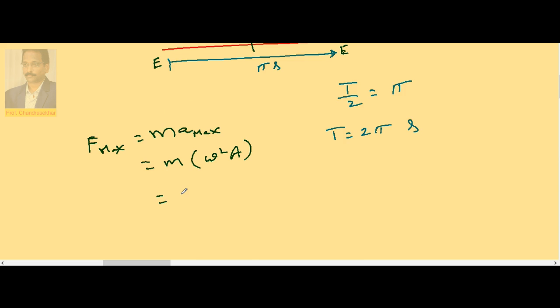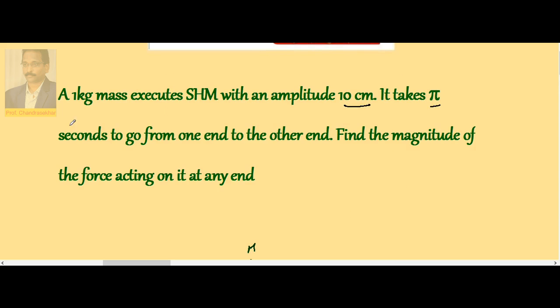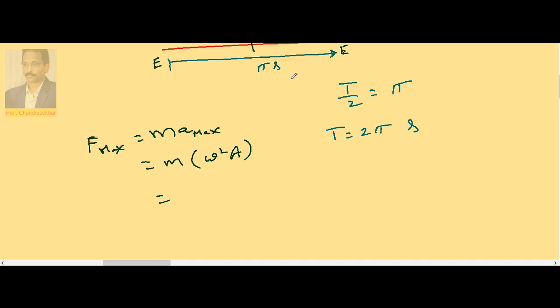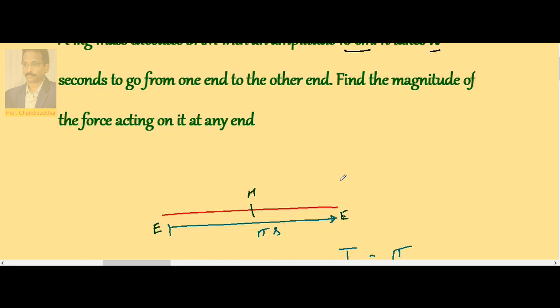Here mass, the mass of the object is 1 kg and amplitude is 10 cm. Substitute: this is 1 kg, omega 2 pi by time period. Time period is also 2 pi, and A is amplitude 10 cm.